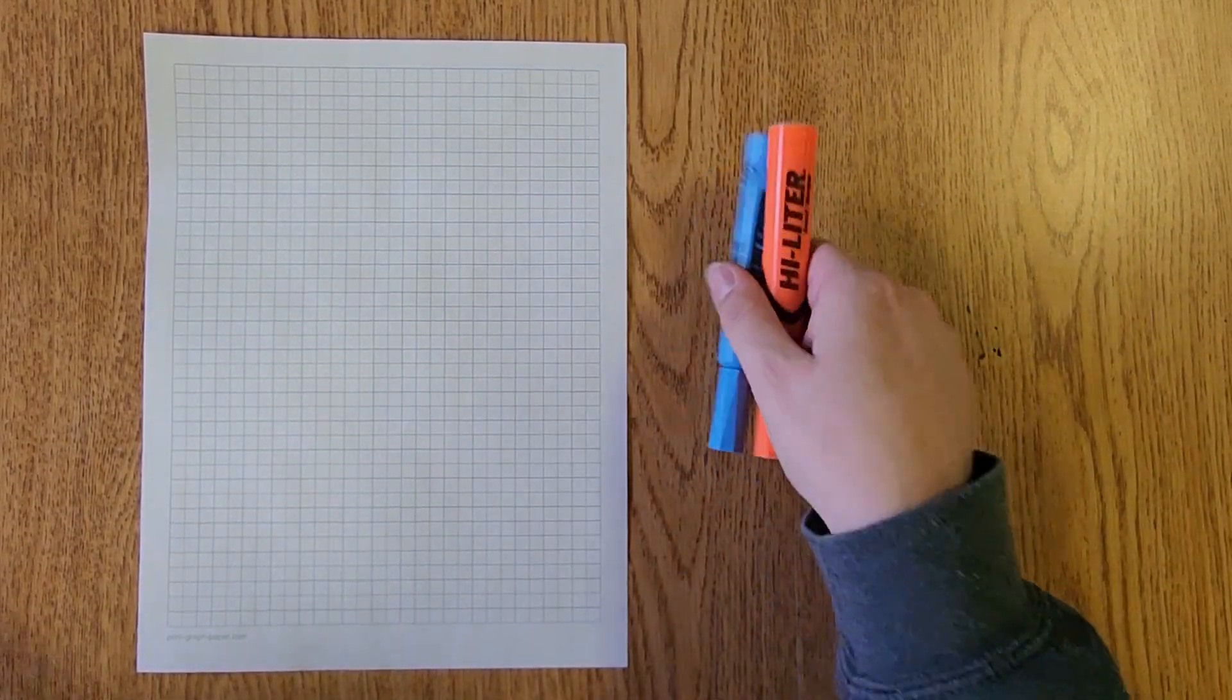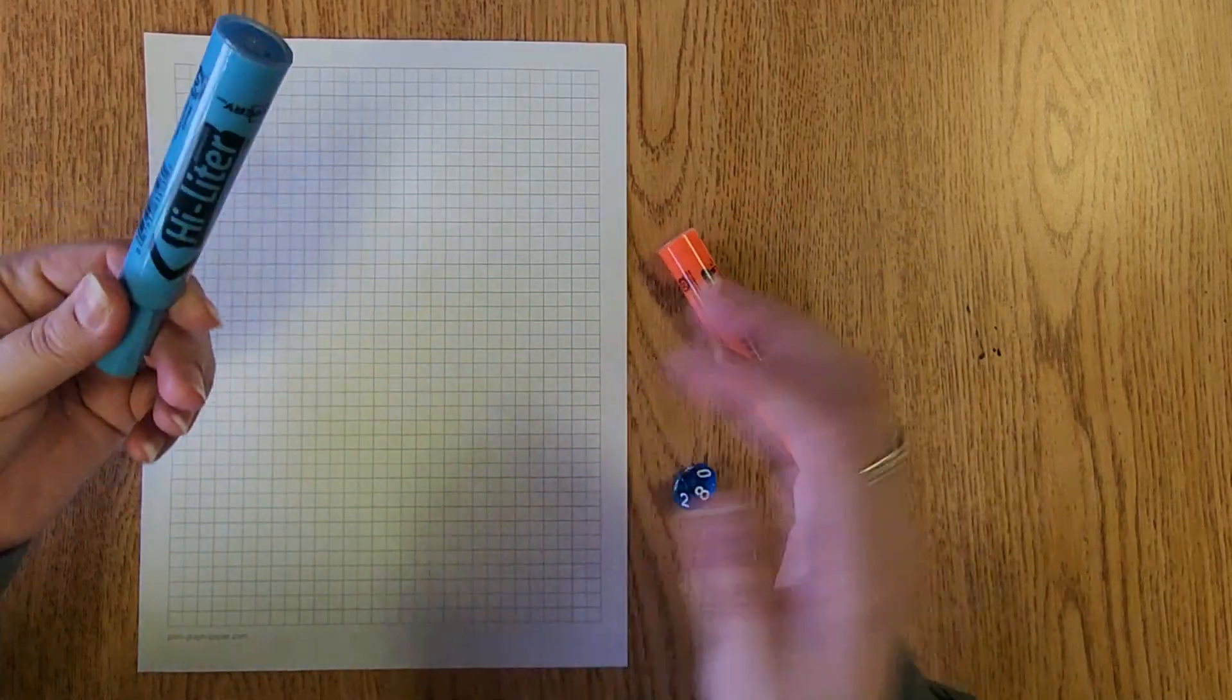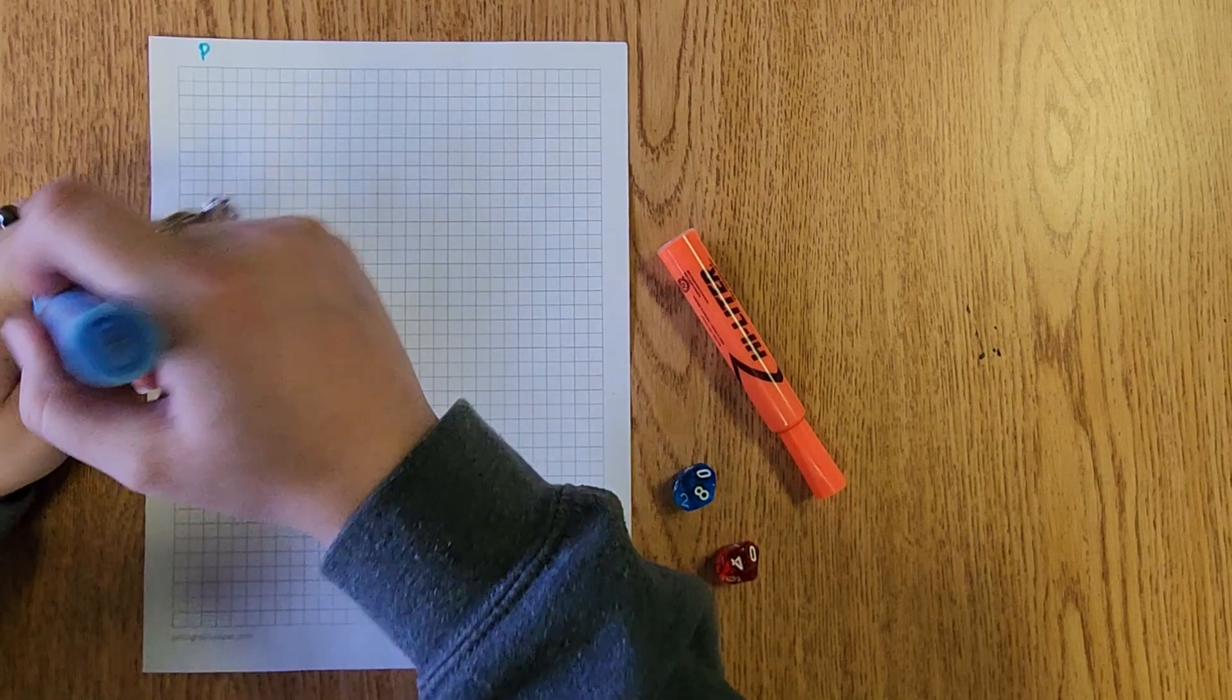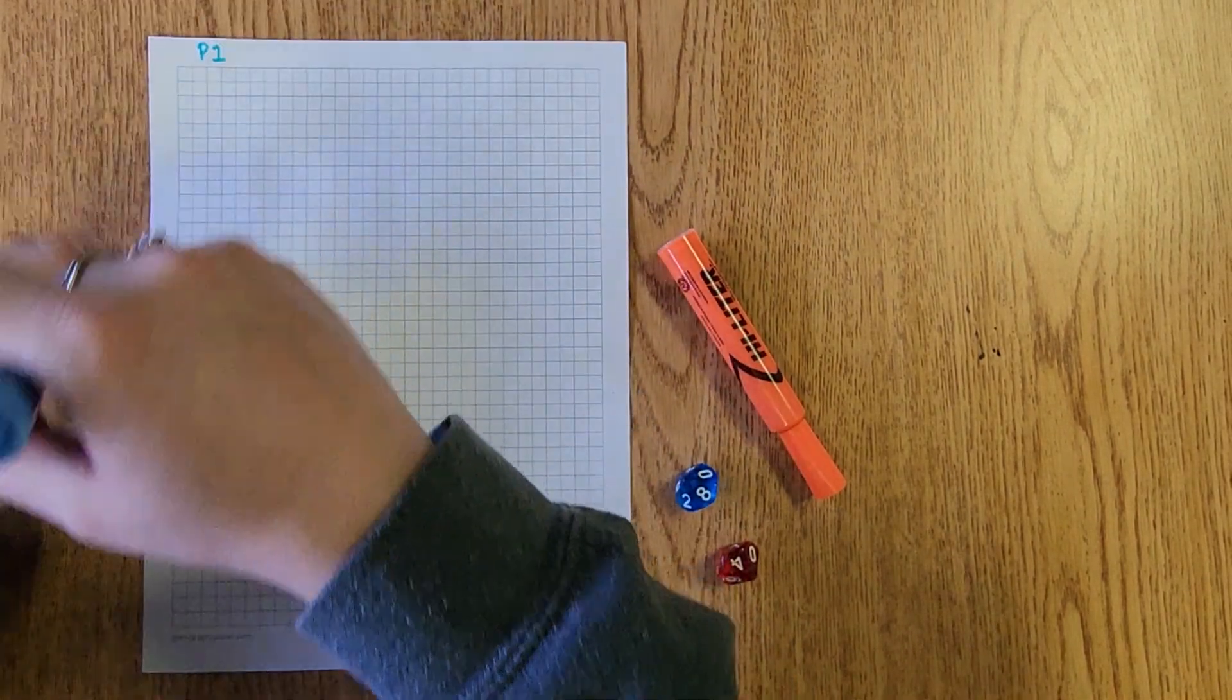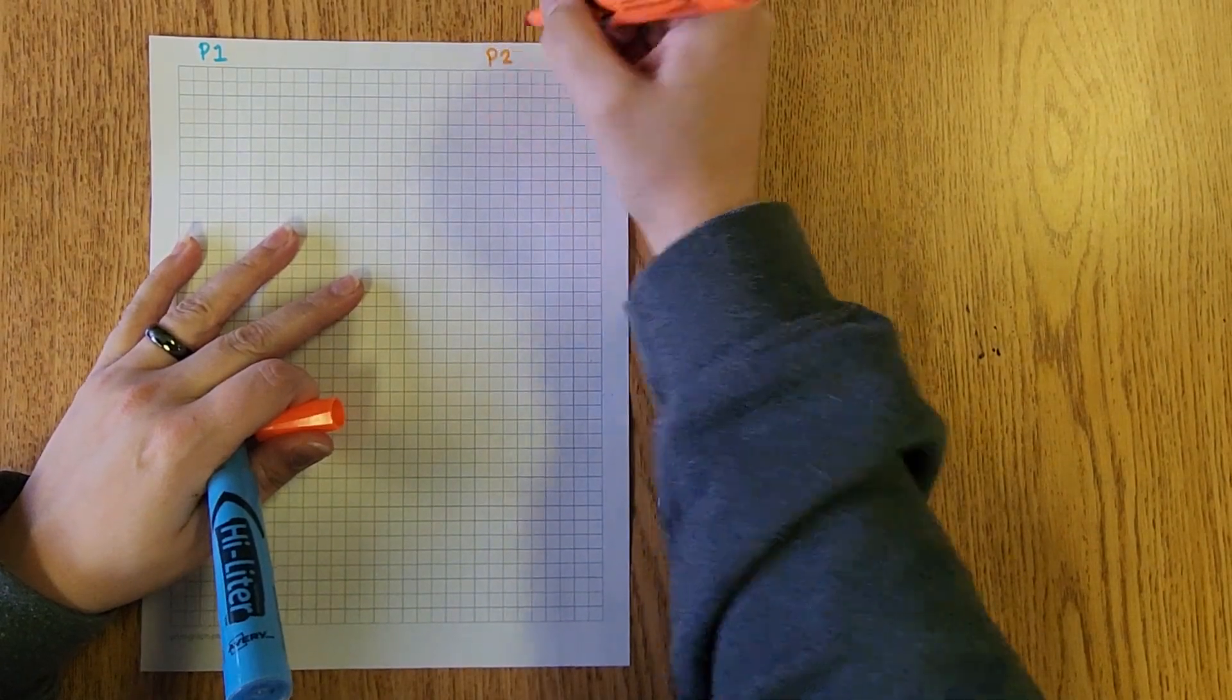So if we had two separate players this would be player one for example. They can write their names on the top if they would like. Perhaps player two is orange.